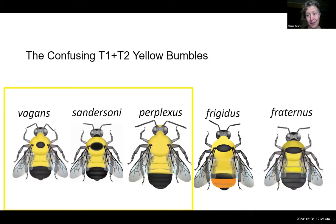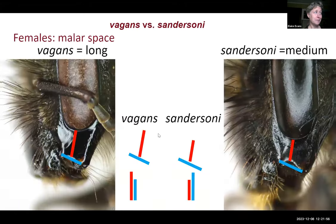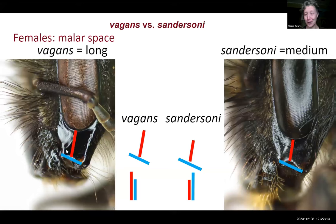Now I'm going to get into details on the confusing T1 and T2 yellow bumblebees — a good number of species where the first two abdominal segments are all yellow and they can be very difficult to tell apart. Two of these species are Vegans and Sandersoni. The shot we need is being able to really clearly see the malar space — also called the cheek — which is the space between their eye and where their mandible starts.